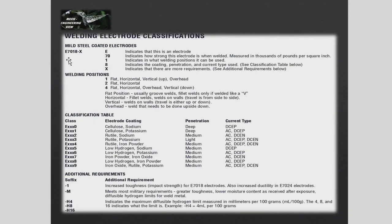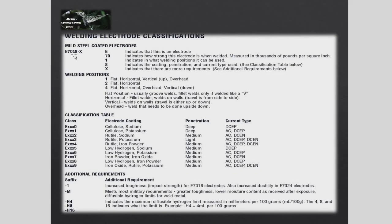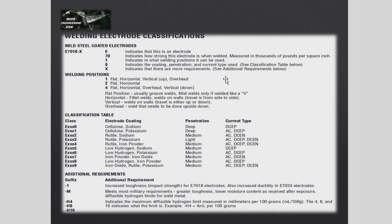So: first two digits are mechanical property (strength), third digit is welding position. The fourth digit indicates the coating, penetration, and current type — what flux coating is used, what current is used, and how deep the penetration is. For example, '8' means low hydrogen iron powder, medium penetration, DCEP polarity. In the upcoming video we will talk about low hydrogen in detail.